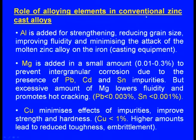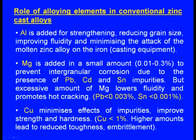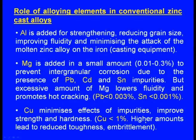Role of alloying elements in conventional zinc cast alloys: aluminum is added for strengthening, reducing grain size, improving fluidity and minimizing the attack of molten zinc alloy on iron. Magnesium is added in a small amount (0.01 to 0.3%) to prevent intergranular corrosion due to the presence of lead, cadmium and tin impurities, but excessive magnesium lowers the fluidity and promotes hot cracking. Copper minimizes the effect of impurities and improves strength and hardness; copper should be less than 1% — higher amounts lead to toughness and embrittlement.